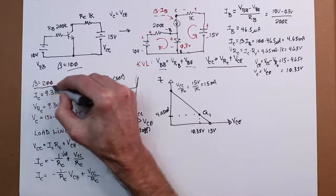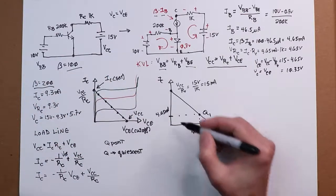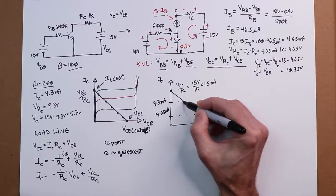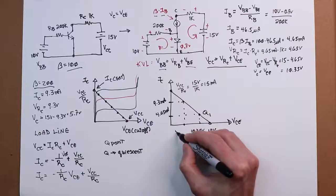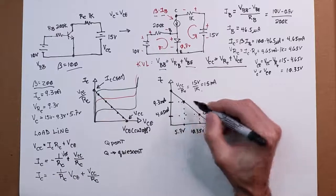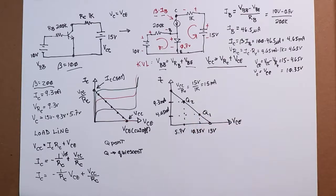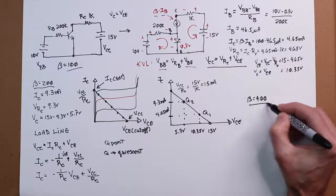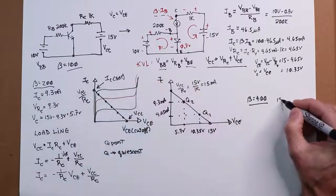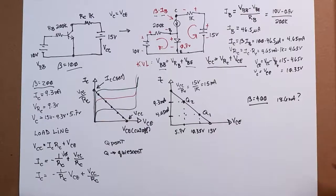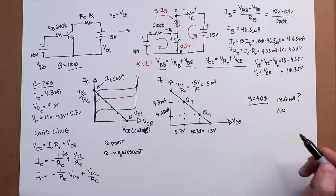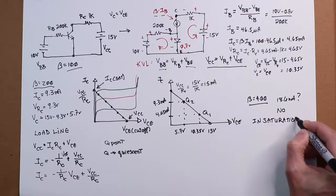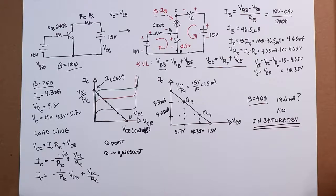Now in our case, if we double it again, if we went to 400, the sort of naive calculation would be well everything doubles up again, we get 18.6. No, 18.6 is off here, it's off the load line. So this circuit's in saturation. If you ever come up with something that's bigger than the saturation current, the circuit's in saturation. That's the end of it.